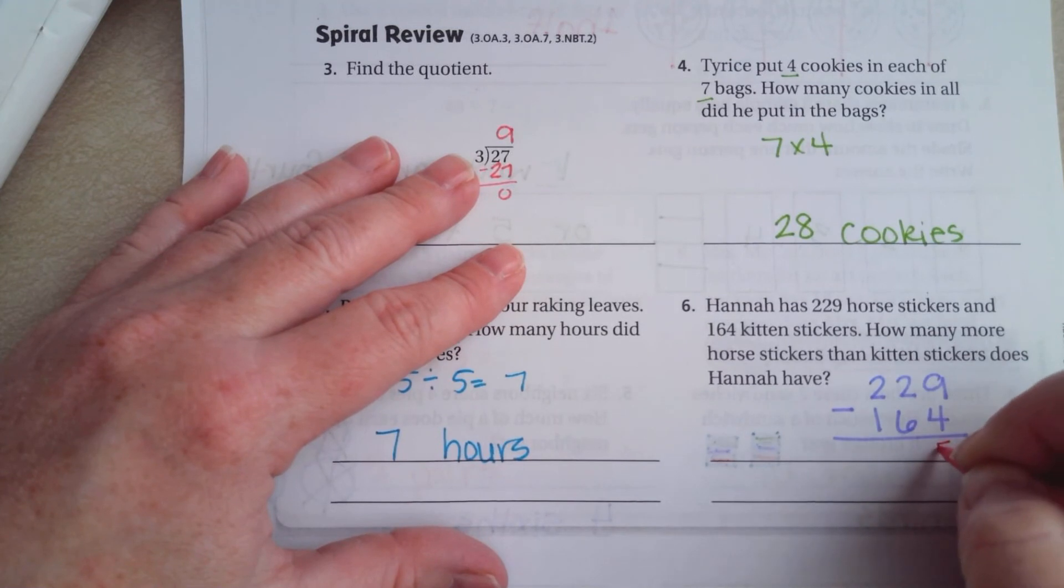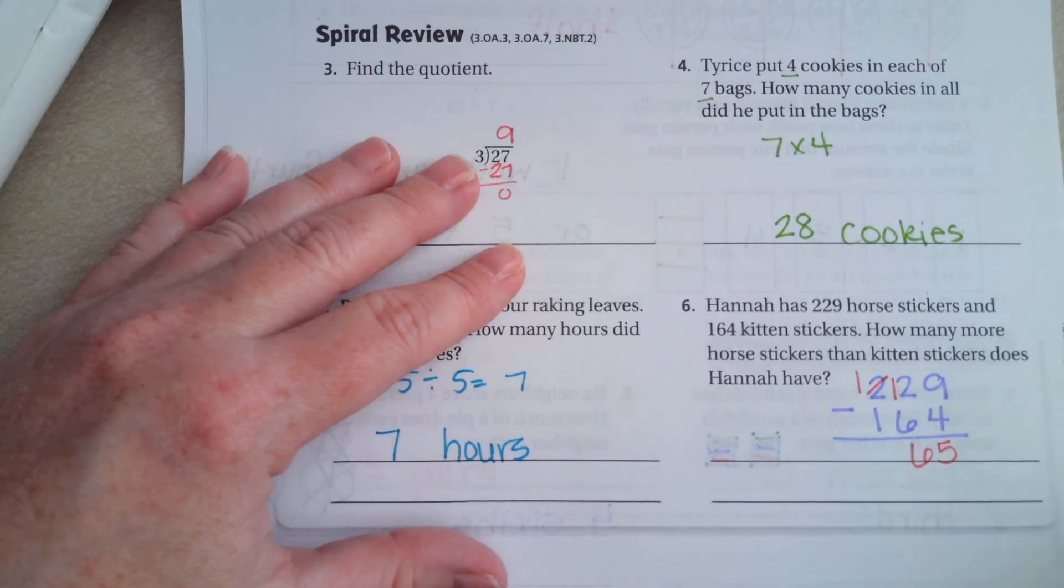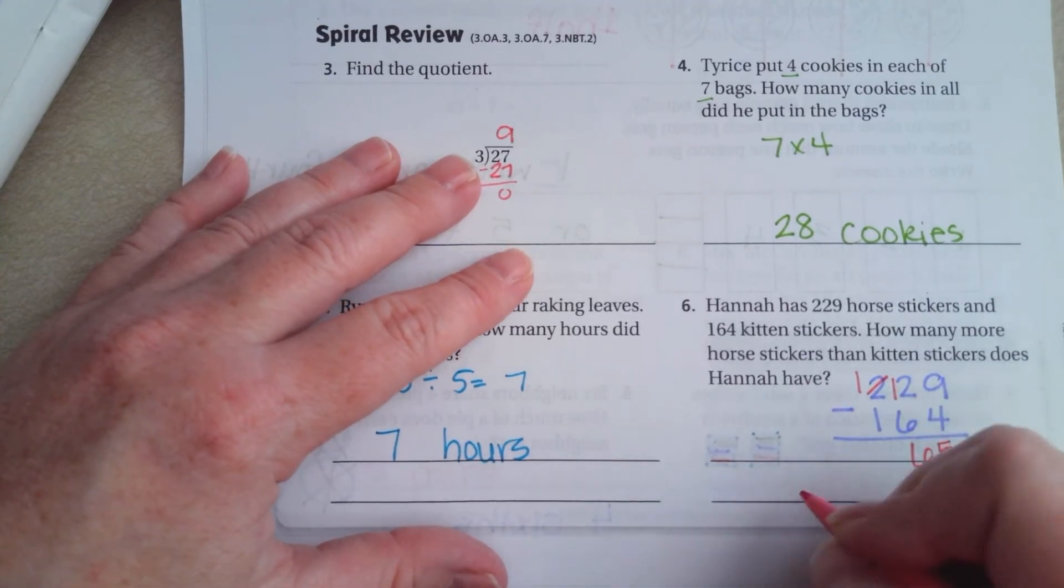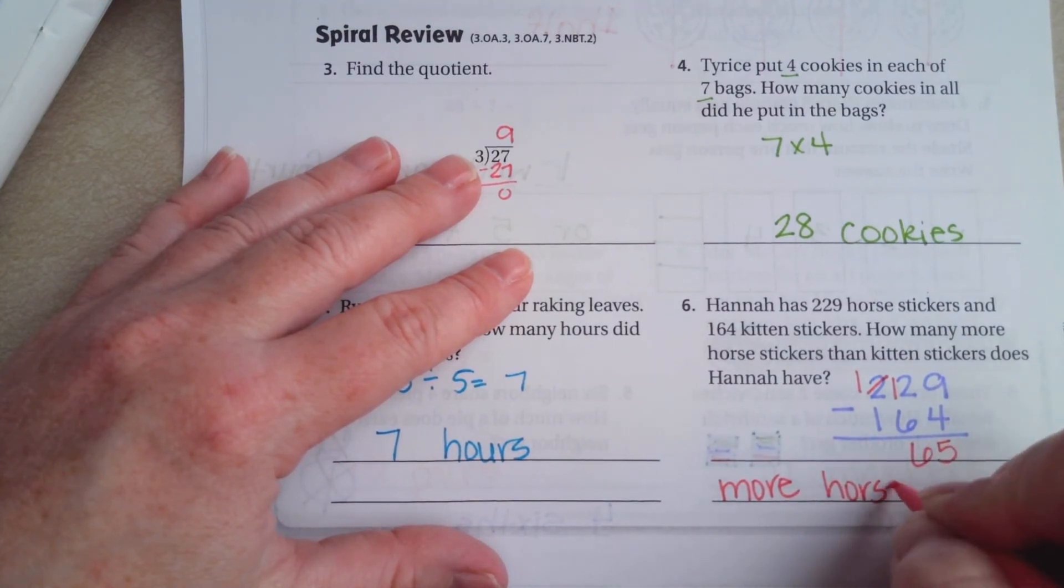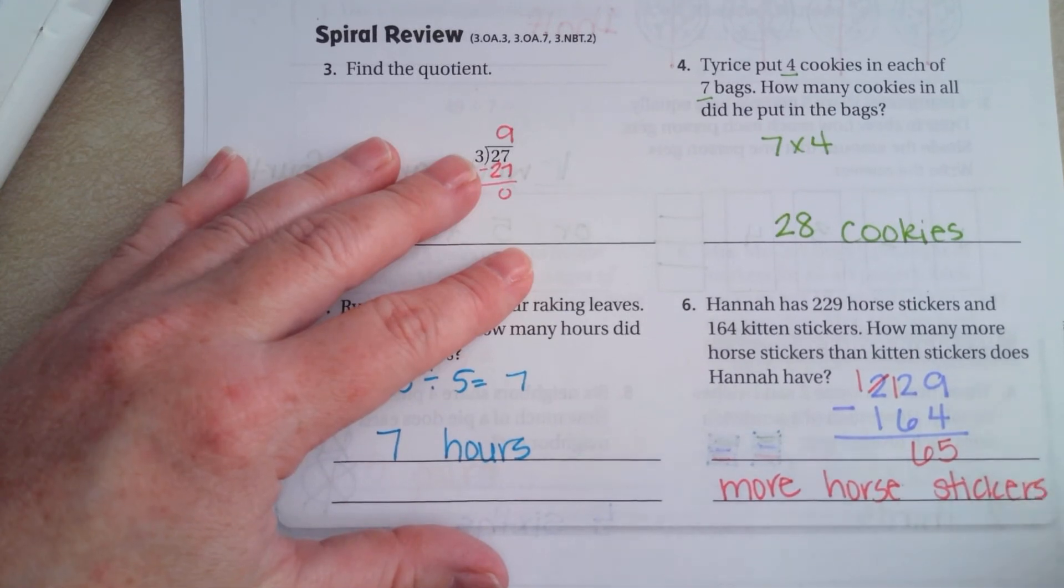9 minus 4, 5. 2 can't take away 6. I'm going to borrow 1. 12 minus 6 is 6, so 65 more horse stickers.